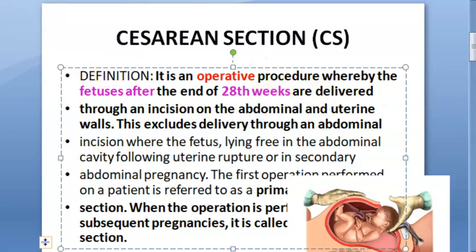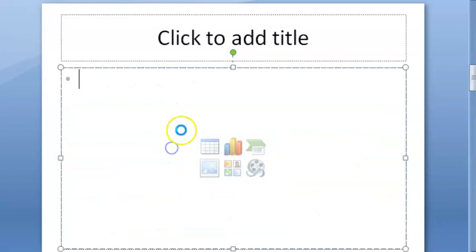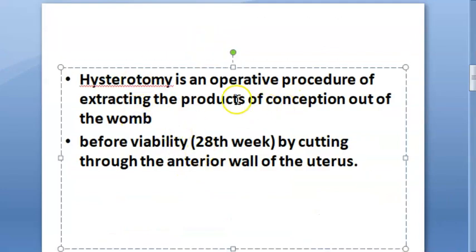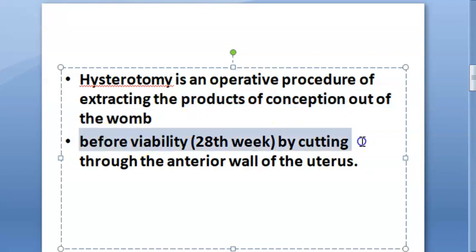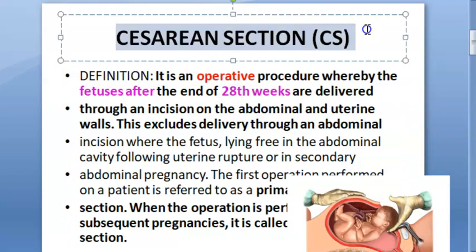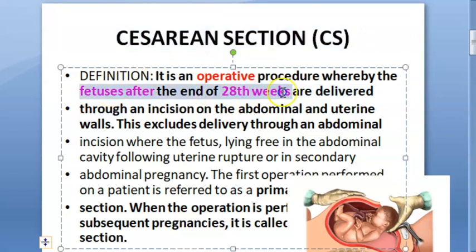If the fetus is before 28 weeks, that is called as hysterotomy. Hysterotomy is where you are removing the products of conception out of the womb before the viability period. Caesarean section is specifically when the fetus is at or after 28 weeks.